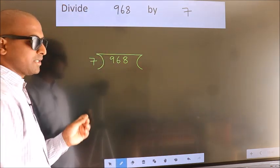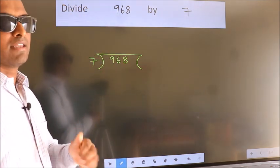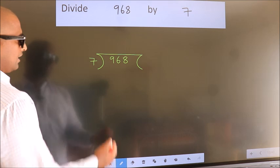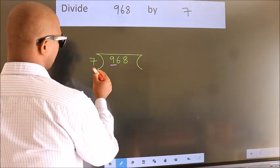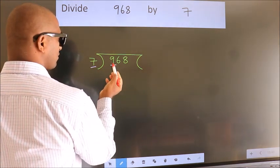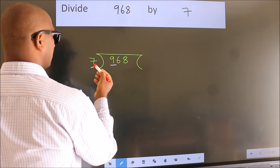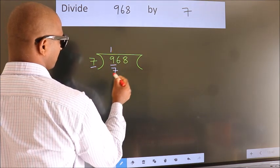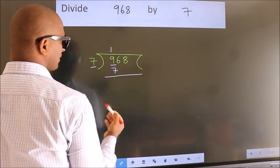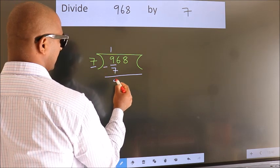This is step 1. Here we have 9, here 7. A number close to 9 in the 7 table is 7 once, which is 7. Now we subtract and get 2.